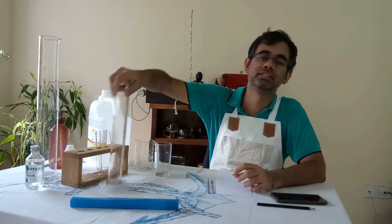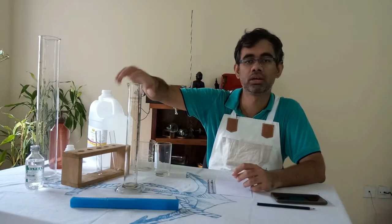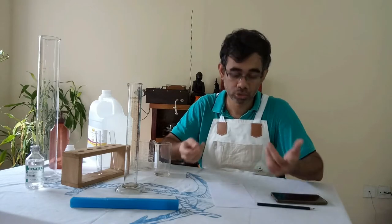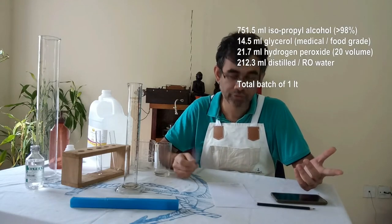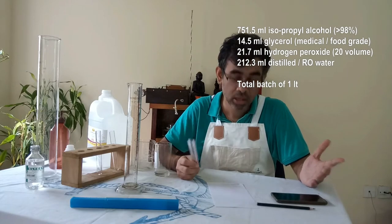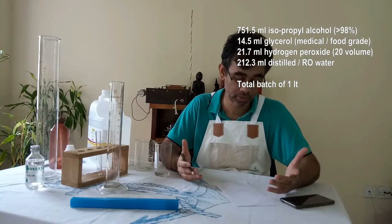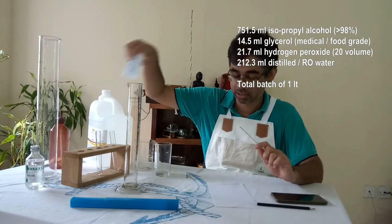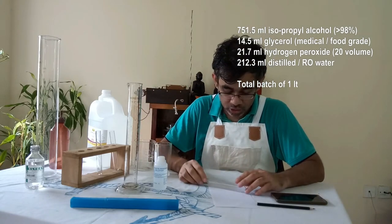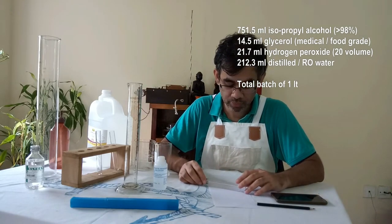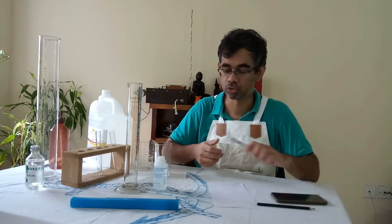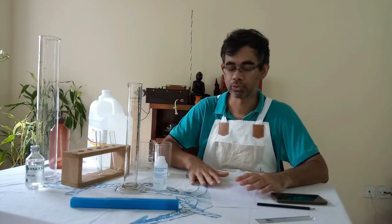If you have access to a measuring cylinder, you can measure out each ingredient in its correct volume and mix them. You require 751.5 ml of 98% isopropyl alcohol, 14.5 ml of glycerol, 21.7 ml of 20 volume hydrogen peroxide, and the remaining 212.3 ml of distilled water. RO water would do just as well.